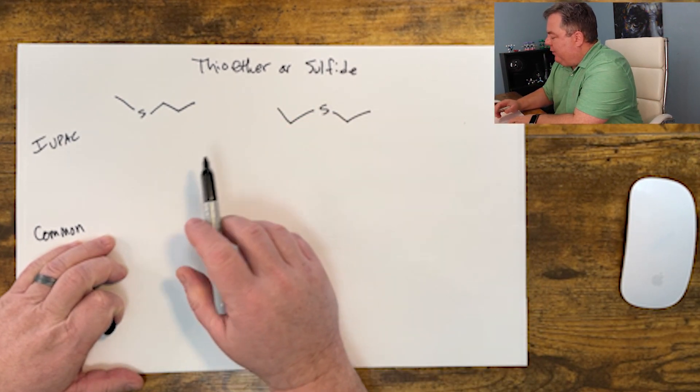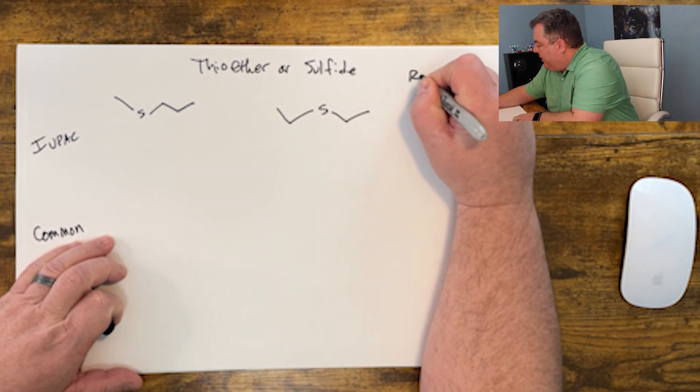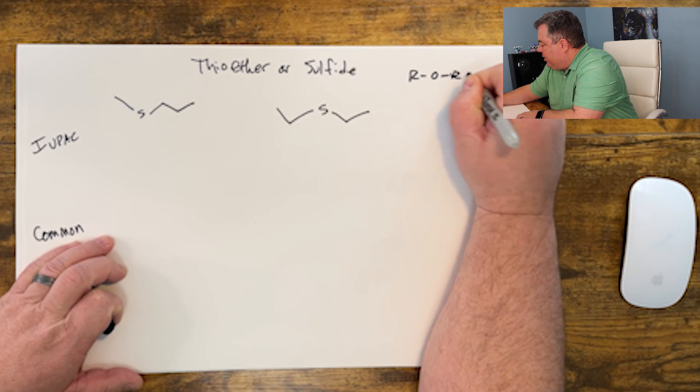We know that a thioether looks an awful lot like an ether: carbon, oxygen, carbon.